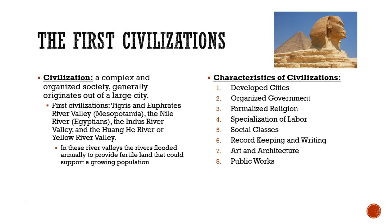A civilization is a complex and organized society. It generally originates out of a large city — not just one city, but a collection of cities altogether. There were four main early civilizations, all known as river valleys. These were Mesopotamia, settled near the Tigris and Euphrates Rivers; the Egyptians, near the Nile River; the Indus River Valley in India; and the Huanghe, or Yellow River Valley, in China. In the river valleys, the rivers flooded annually to allow for fertile soil that could support a growing population.